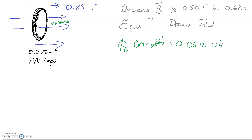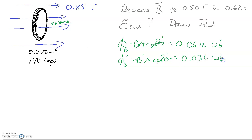Then the magnetic field is going to get weaker, so we find our new flux. Same type of calculation, except weaker this time. So we've got B of 0.5, multiplied by the area of 0.072, giving us 0.036 Webers. We've got our first flux and our second flux, so we want our change in flux. We subtract the two, and it ends up being negative because we have less flux — the change in flux is negative 0.0252 Webers.